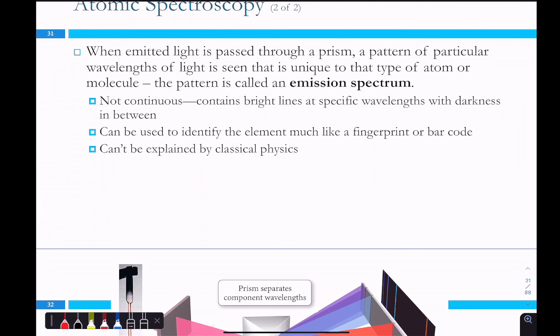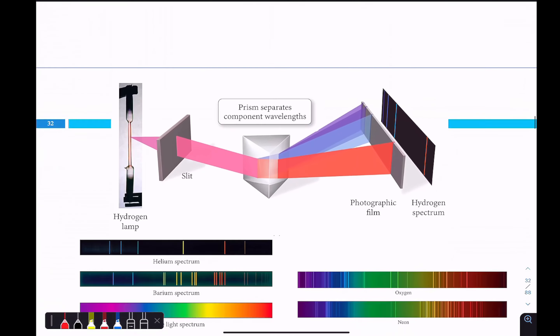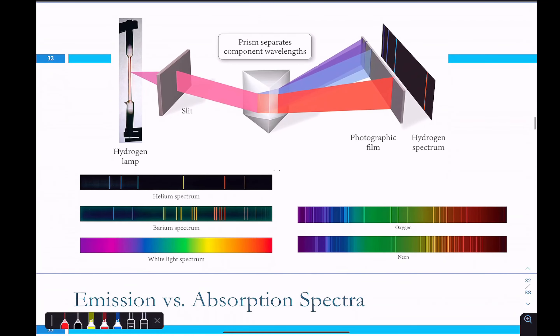Light can have the properties of both waves and particles. The emission spectrum of light from a particular element isn't continuous — it doesn't produce every frequency of light. Elements produce specific frequencies of light, with darkness in between. We can use those specific frequencies to identify different elements, like a fingerprint or a barcode. This defies classical physics.